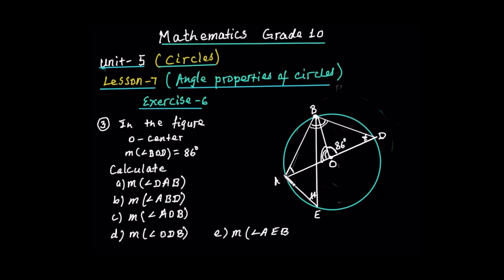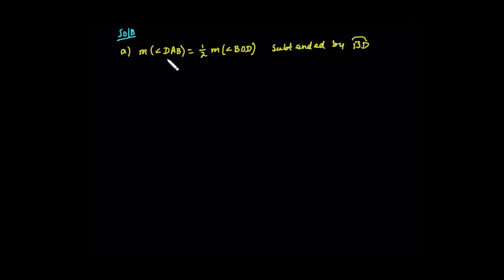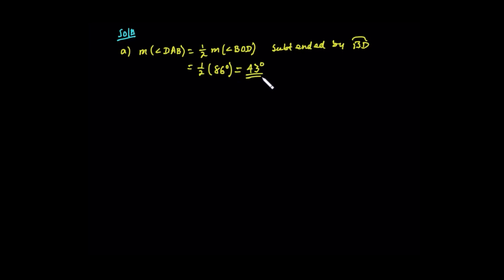Angle DAB is half the measure of this arc. The arc — so half of the central angle. Therefore, the measure of angle DAB is half the measure of central angle POD, because they are subtended by the same arc. And this is equal to half of 86 degrees, and this becomes 43 degrees.